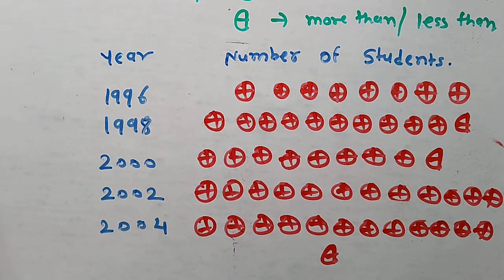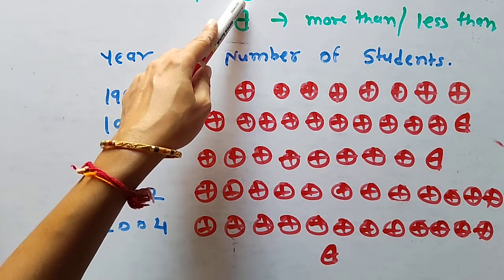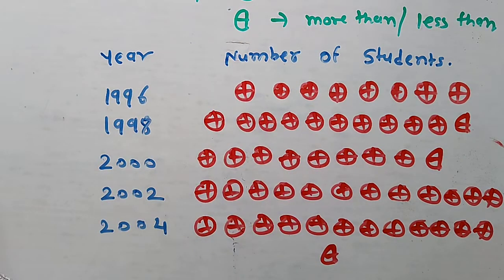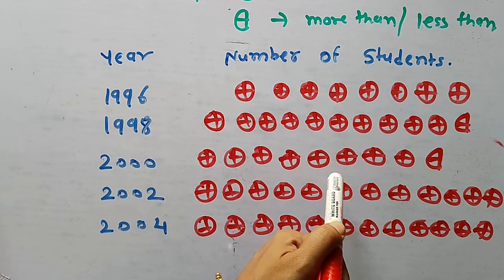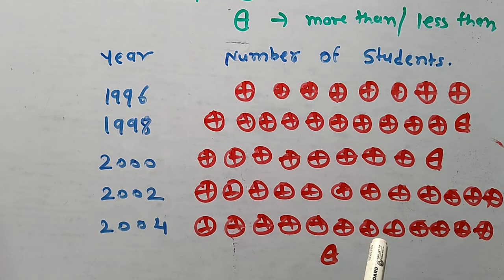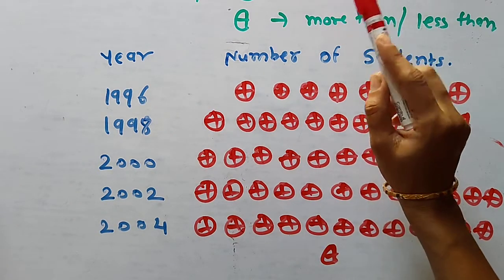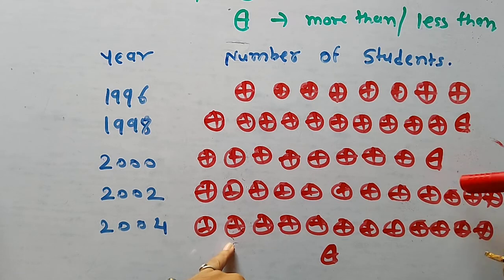Which pictograph do you find more informative? In the first pictograph, one symbol means 100 students. In the second, one symbol means 50 students. Pictograph B is more informative because it gives a better approximation — with a smaller unit of 50 students, the representation is more precise.